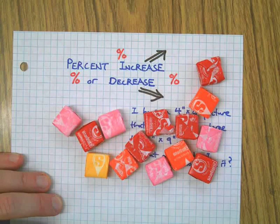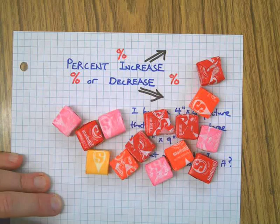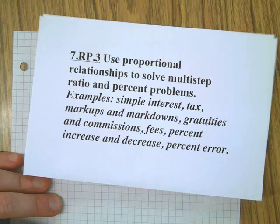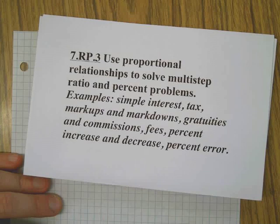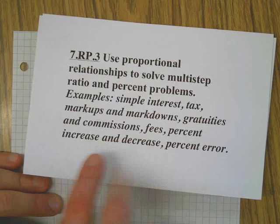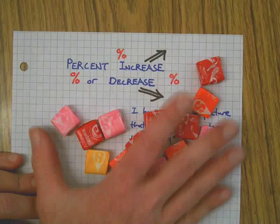The Common Core standard we're talking about here is RP3, using proportional relationships to solve ratio and percent problems, which includes percent increase and decrease. We're really focused on just this type of problem here.